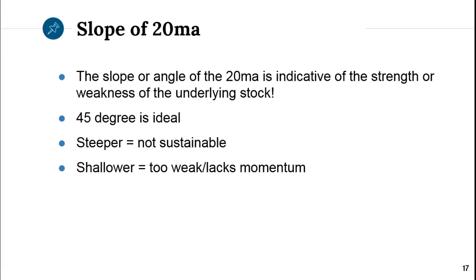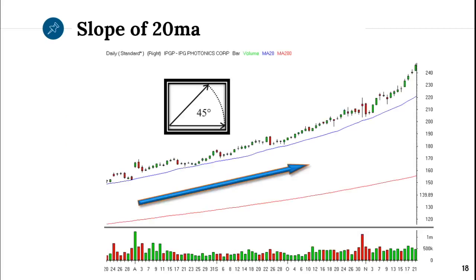The slope or angle of the 20MA is indicative of the strength or weakness of the underlying stock. 45 degrees is ideal because you're not burning up too much demand — it's sustainable. Steeper would be not sustainable, meaning you're starting to accelerate. Shallower than 45 degrees means it lacks momentum — maybe sideways, but not really trending.